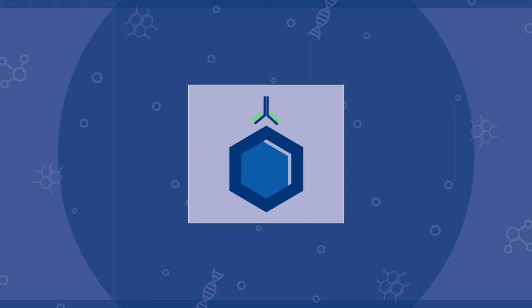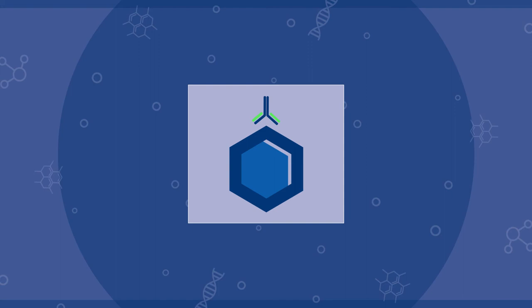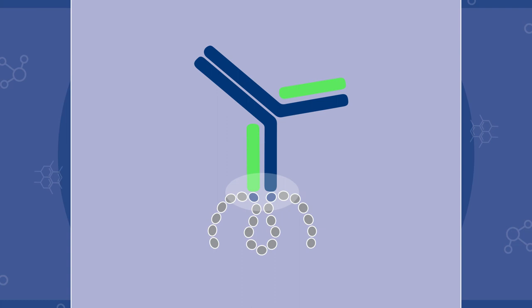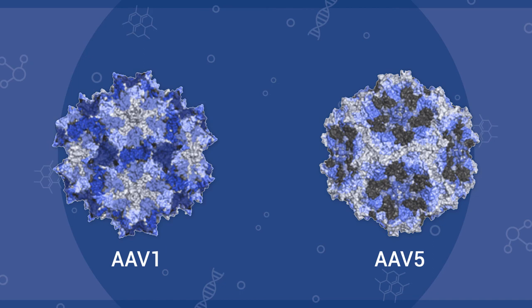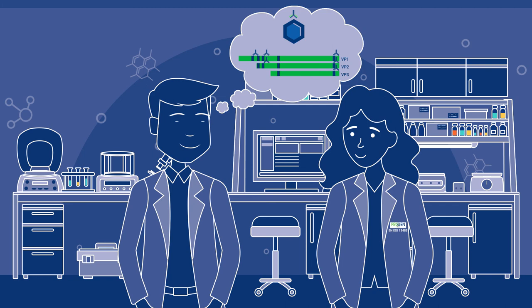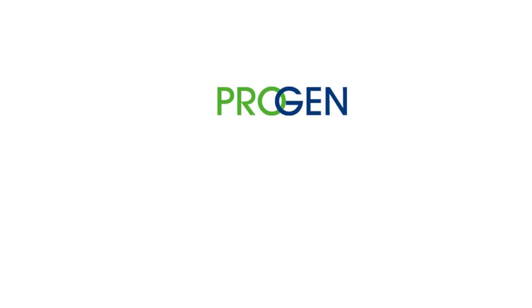AAV particle antibodies detect conformational epitopes on the surface of AAV particles, only present in fully assembled capsids. They show less cross-reactivity since the conformational epitopes are more diverse. ProGen offers a unique AAV antibody portfolio of both AAV capsid protein and AAV particle antibodies. Check out ProGen's exclusive AAV antibody portfolio.